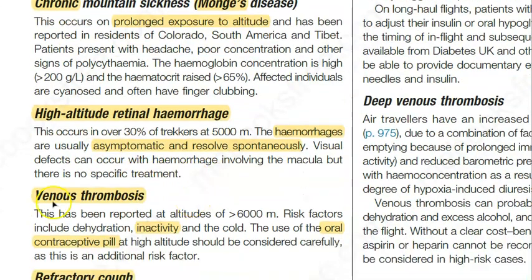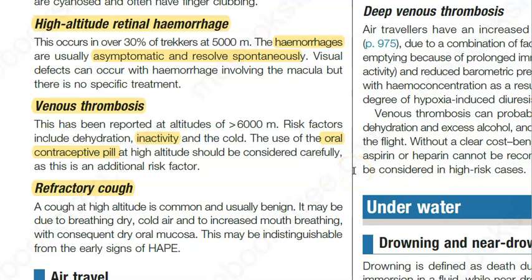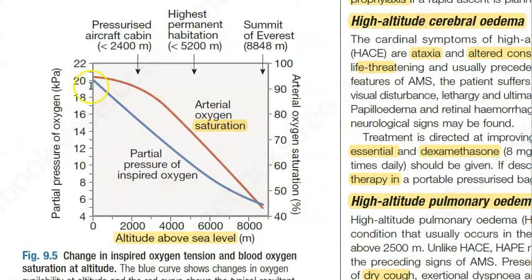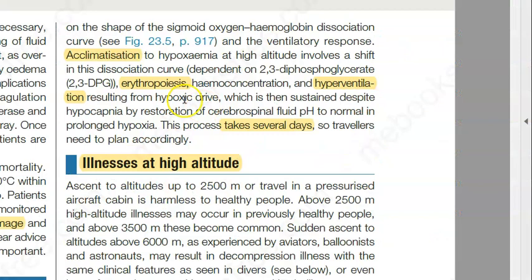Don't allow people on oral contraceptive pills to climb rapidly, as they can go into venous thrombosis. Recap: high altitude means climbing a mountain where atmospheric pressure decreases, so the partial pressure of oxygen decreases — the proportion of oxygen stays the same but the partial pressure reduces. So there will be less oxygen tension in your alveoli. People living at high altitudes will have higher RBC count, more erythropoiesis, more hemoconcentration, and they will breathe faster through hyperventilation to acclimatize. This process takes several days, so climb slowly.